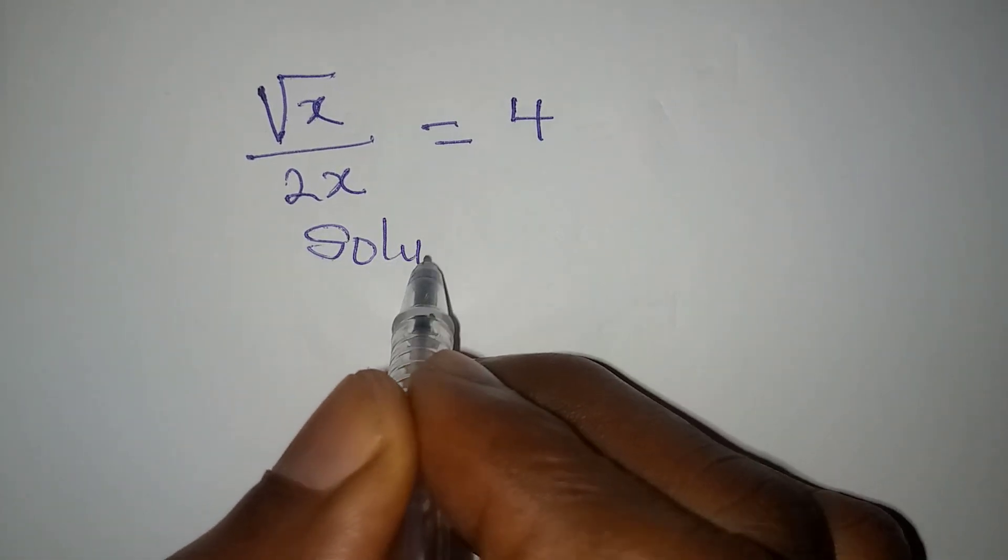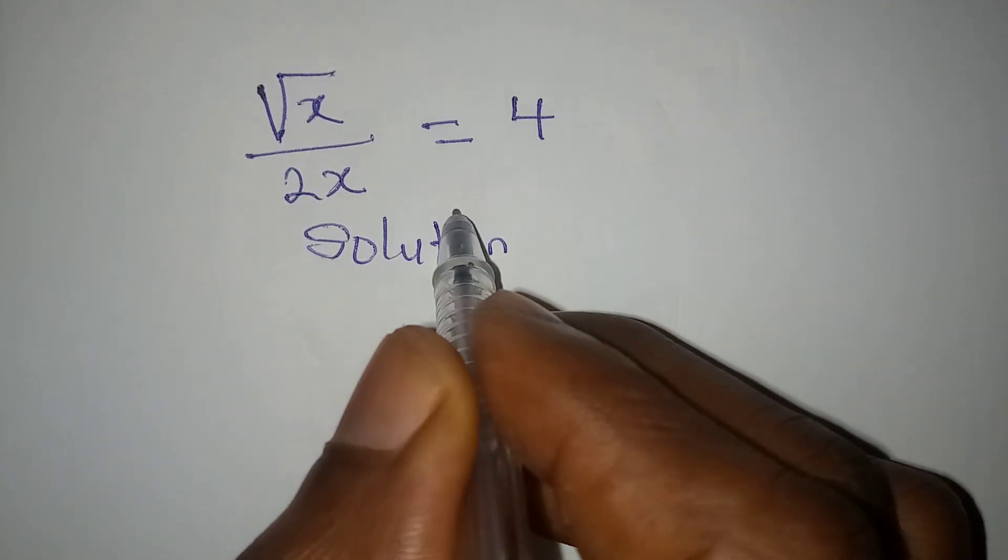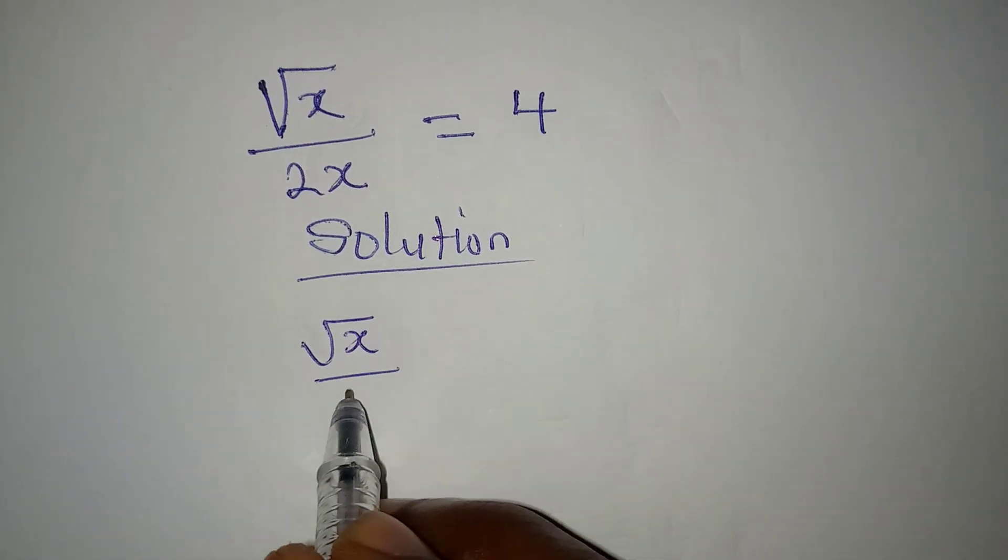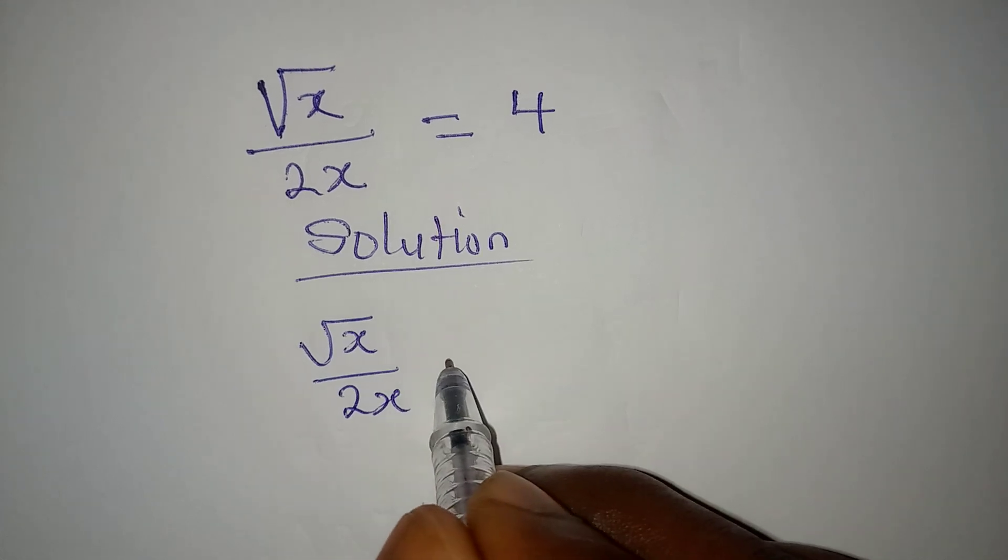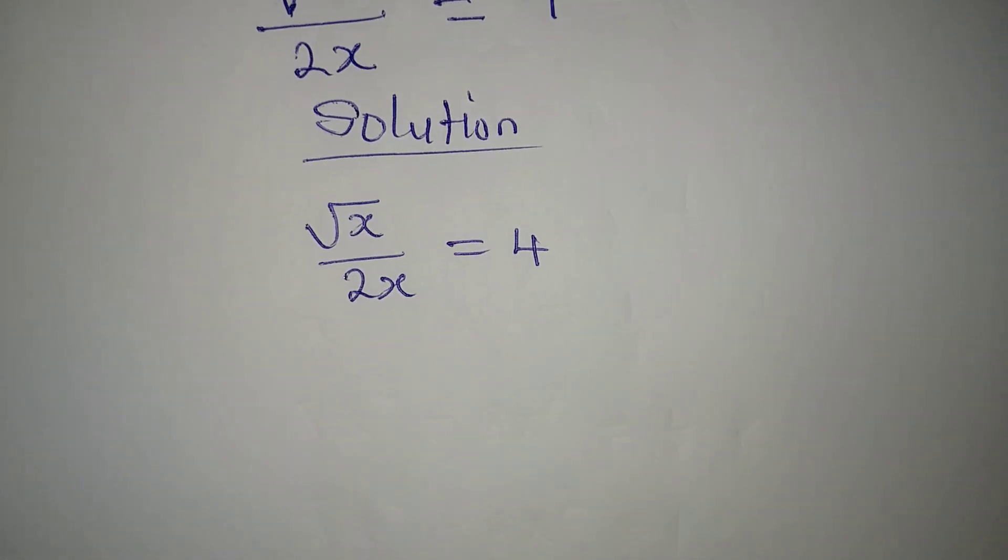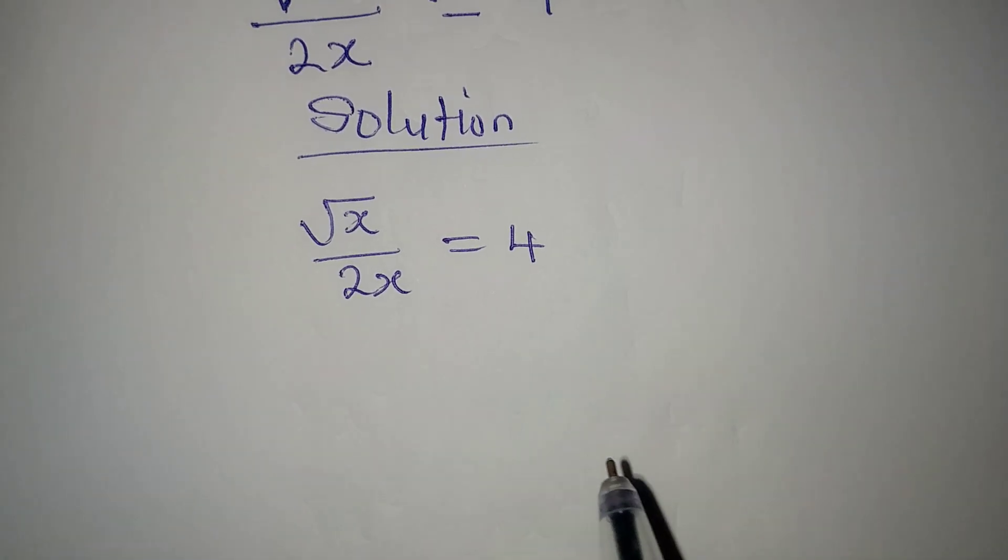Hello everyone, let's provide a solution to this: square root of x over 2x equals 4.